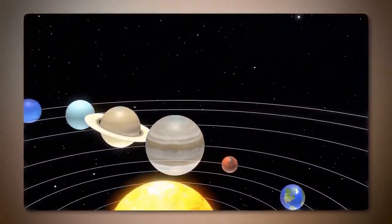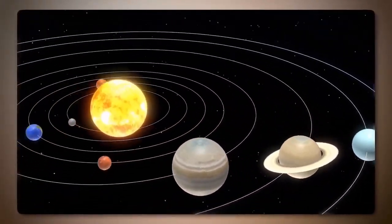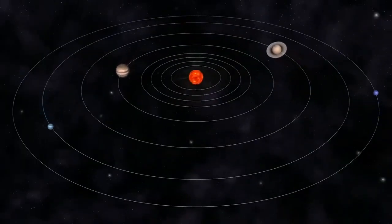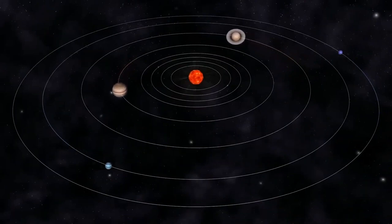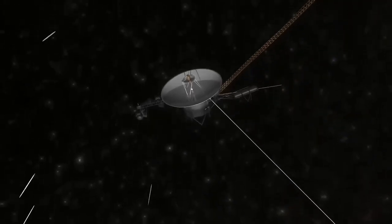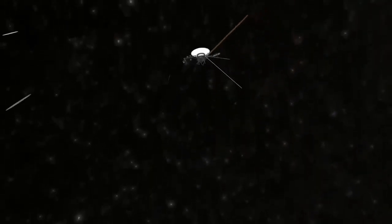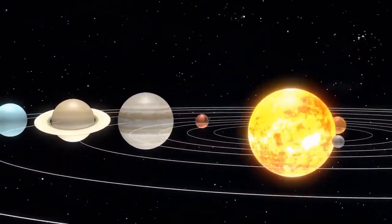Just weeks after Voyager 2's launch on August 20, originally designed for a five-year mission to study the outer planets, these resilient probes have surpassed all expectations, continuing to send data back to Earth more than 44 years later as they venture into interstellar space.